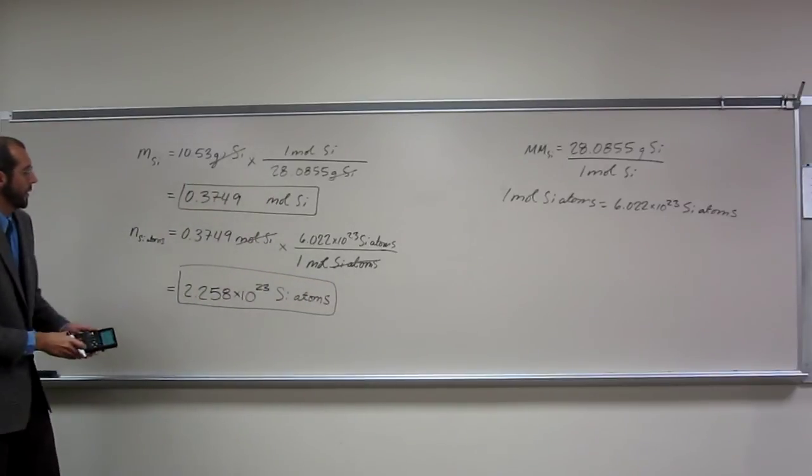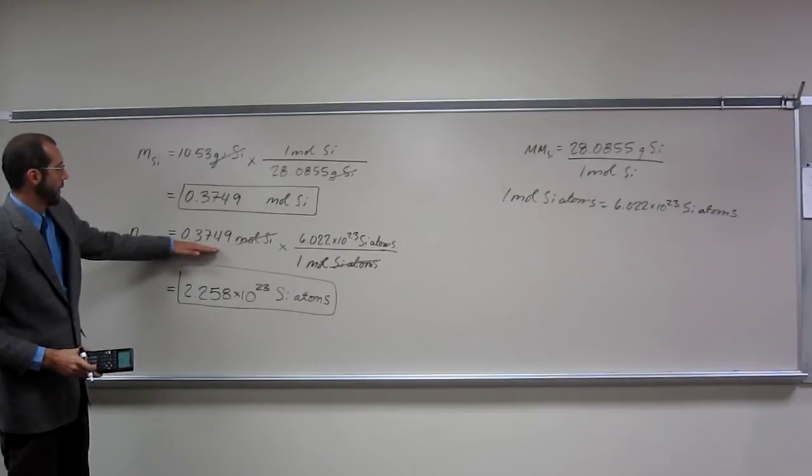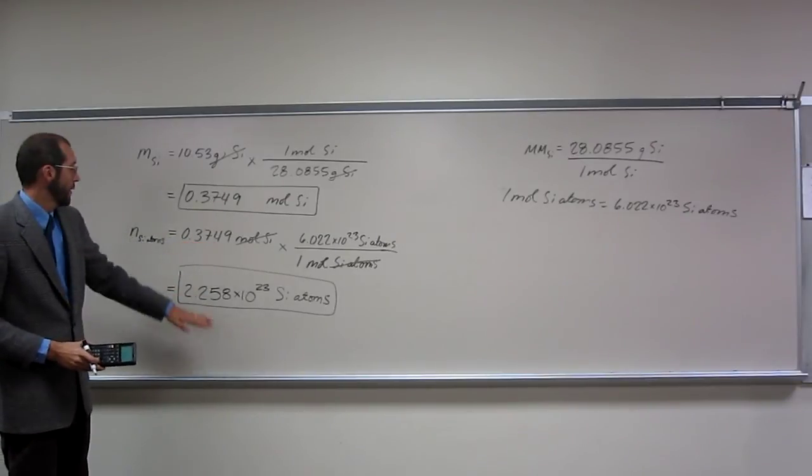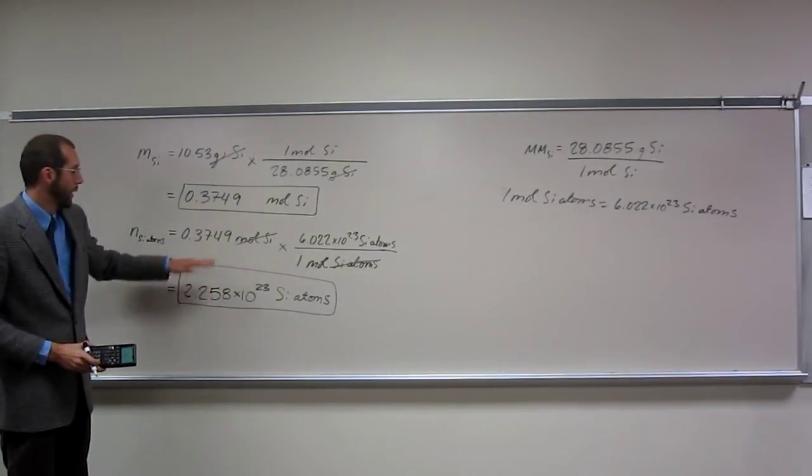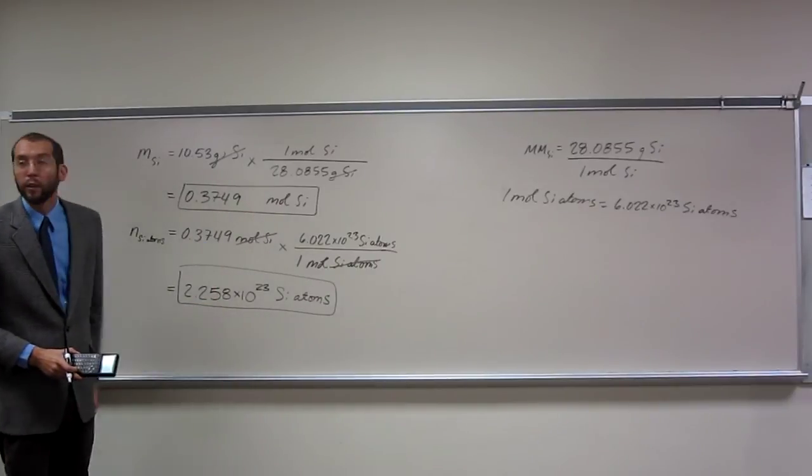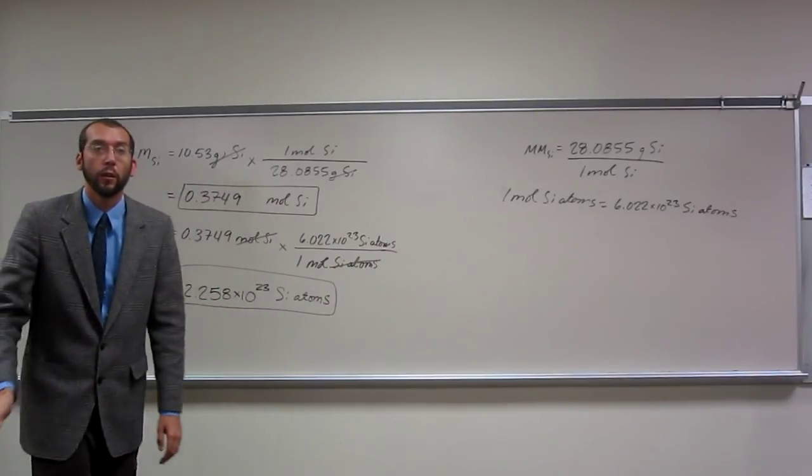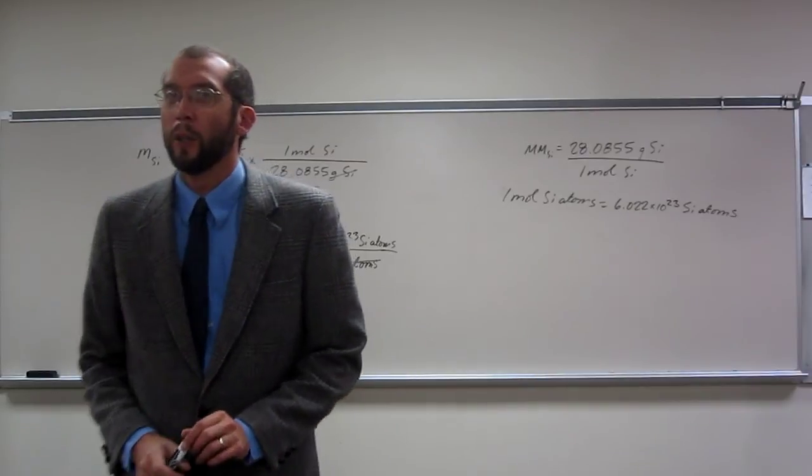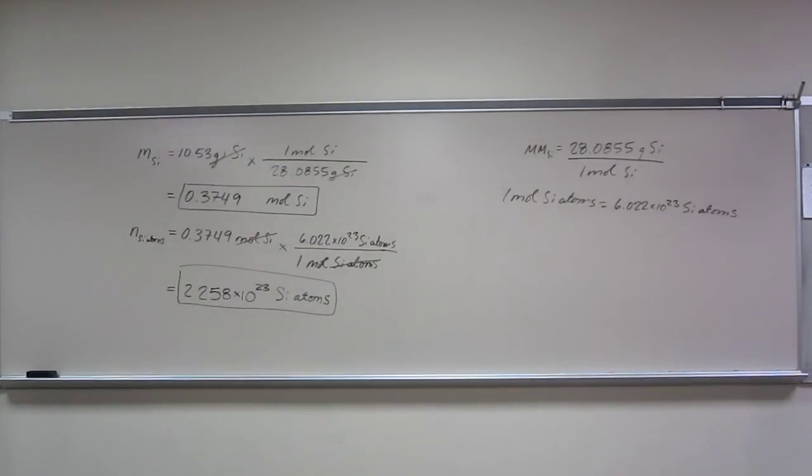And that should be something around there, because this is one-third of one, right? So this should be kind of like one-third of 6.022 times 10 to the 23rd. Is everybody okay with that? Any questions on it?